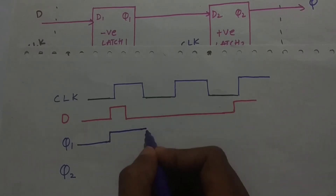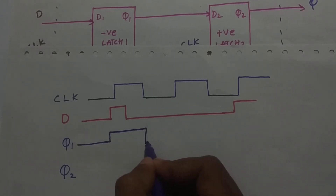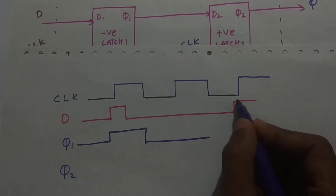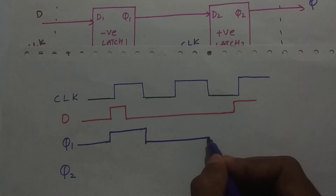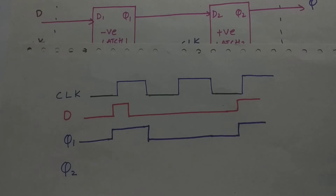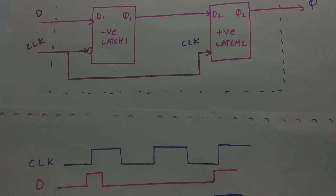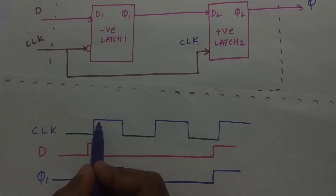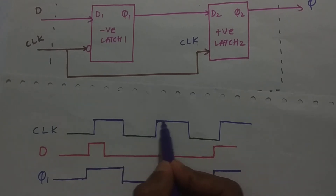Here it will be 0, so it will be 0 and continue till here. At this negative region, as you can see, there's a high in the input. So here we got our Q1. This Q1 will be passed to the positive latch. The positive latch will be transparent in the positive region — that is when the clock is high — in these regions it will act as transparent.